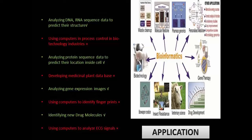See, the letters I have written in green color mention what is bioinformatics and the thing in red is what is not bioinformatics. For example, analyzing DNA or RNA sequences to predict their structures is bioinformatics. But it is not the same in the case of using computers in process control in biotechnologies.